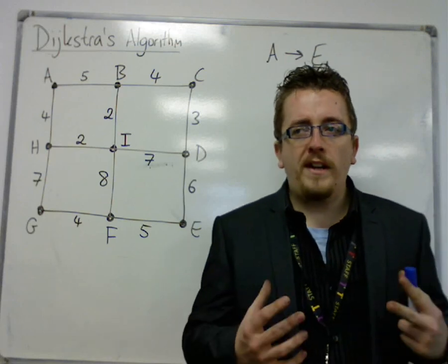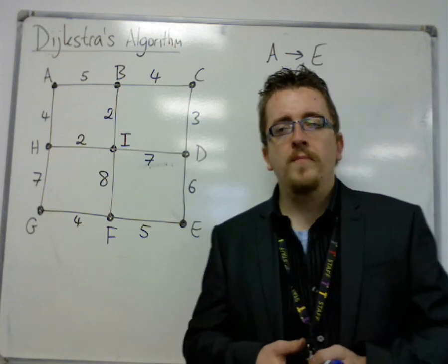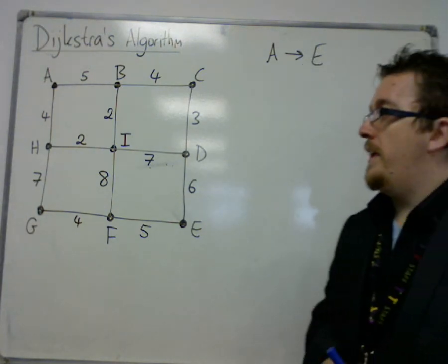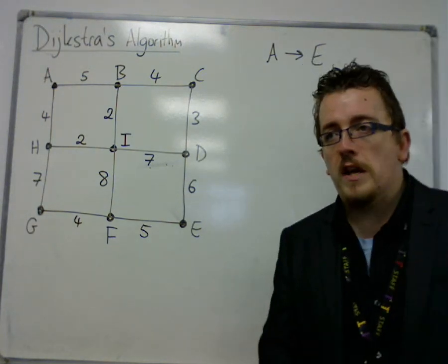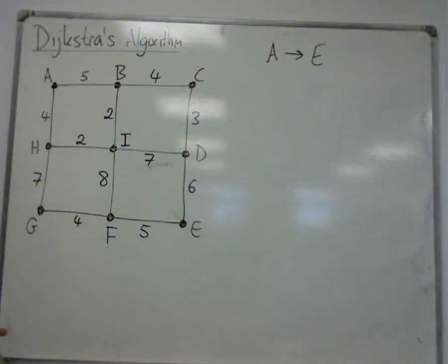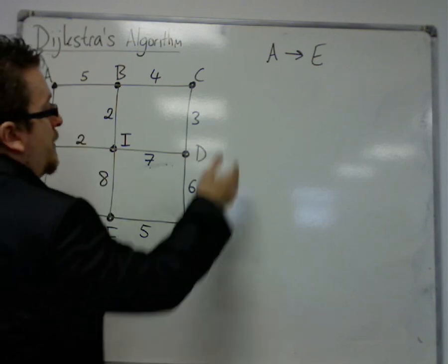Okay, so I'm going to go through a second example of Dijkstra's algorithm. A little bit faster than the first time, just so that we can see a little bit more of what's going on. So this one, I'm trying to find the shortest distance from vertex A to vertex E.